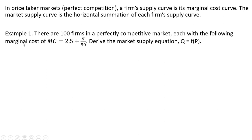Problem 1. There are 100 firms in a perfectly competitive market, each with the following marginal cost given by this equation. We want to derive the market supply equation where the quantity supplied in the market is a function of the price.